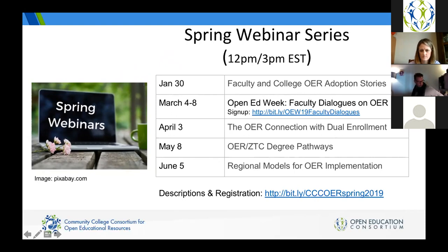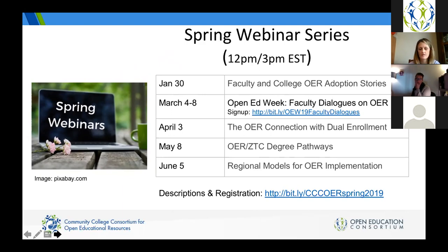We are encouraging people to participate in the faculty dialogues — you can see the signup link there, it goes to a Google form. We are looking for people to participate right now and haven't chosen the disciplines yet because we wanted to leave that up to the community. There's also April 3rd: OER connection with dual enrollment; following in May: OER and zero textbook cost degree pathways; and finally in June: regional models for OER implementation. You can see everything you need at the registration page.